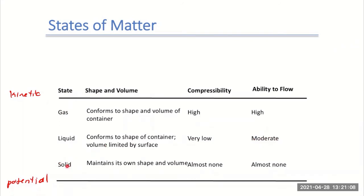Solids, on the other hand, maintain their own shape and volume. You can't compress a solid and the solid does not flow. So solids have lots of potential energy. If we think about kinetic to potential energy: gases have the highest kinetic energy and therefore the lowest potential, and then solids have the highest potential energy and the lowest kinetic because they're not moving around much.